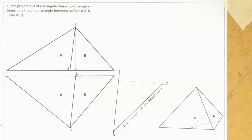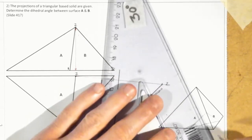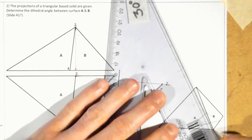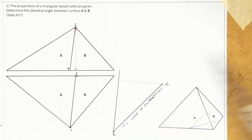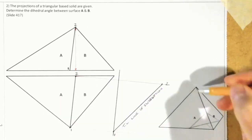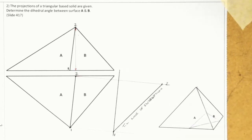Now what we have done is we have got the true length of the line of intersection. Using the pen, I'm going over this line on the pictorial view — that line is essentially what we're after getting the true length of. Now we're going to start with the rebatment method.